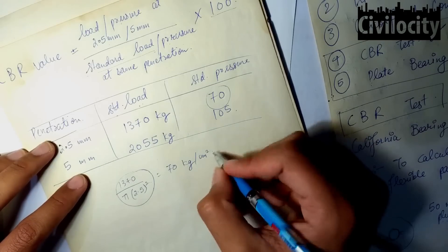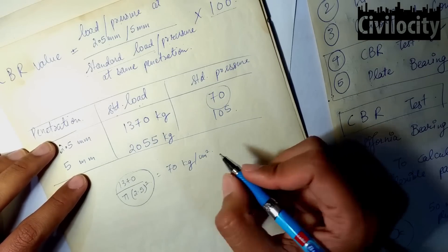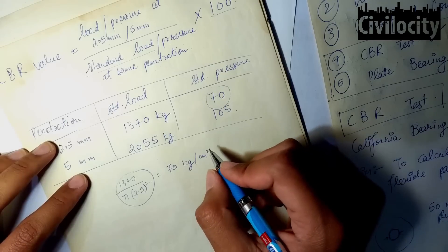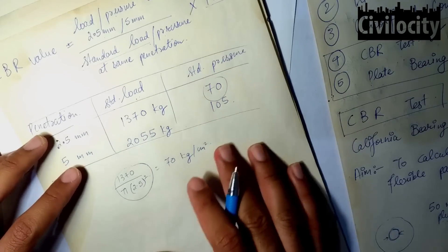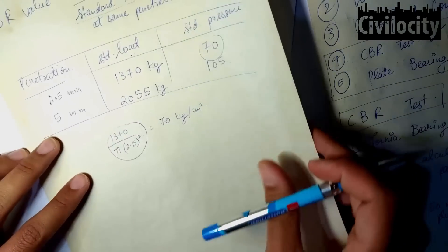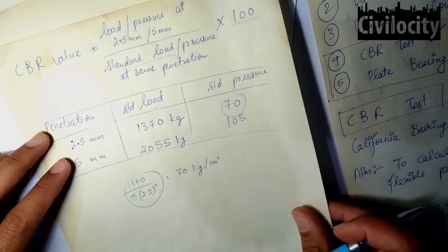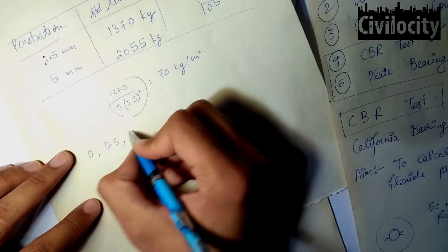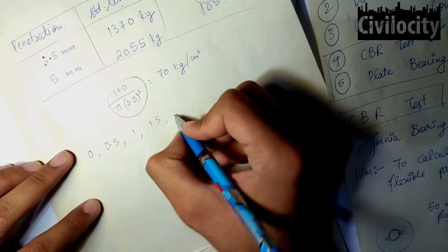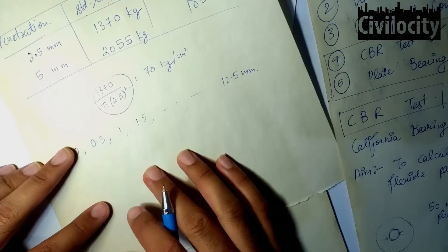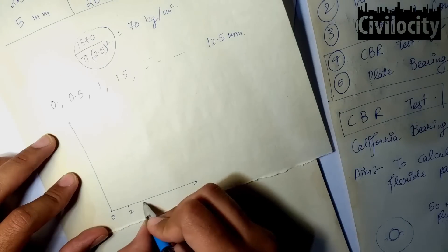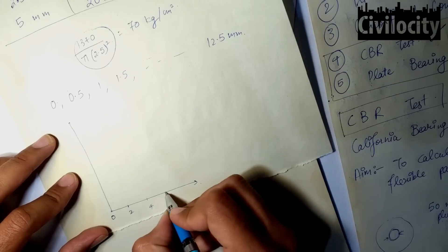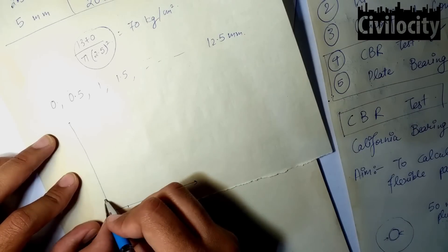The CBR values are always in percentage. The penetration values are measured at intervals of 0.5 mm — that is, 0.5, 1.0, 1.5, and so on up to 12.5 mm. After finding the penetration values, we plot a graph between load and penetration values.